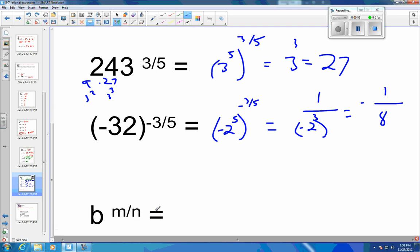And the last one, b to the m over n. This is actually your concept, your key concept on this one. So that becomes b to the nth root, and that's going to be an m exponent on there. So the bottom becomes your index on your radical, and the m, the top part becomes your power.